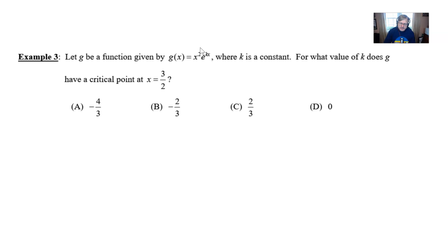In this case we've done something just a little bit different. We want you to find the k at which the critical point exists at three halves. So you're still going to have to think about taking this derivative of the function g.